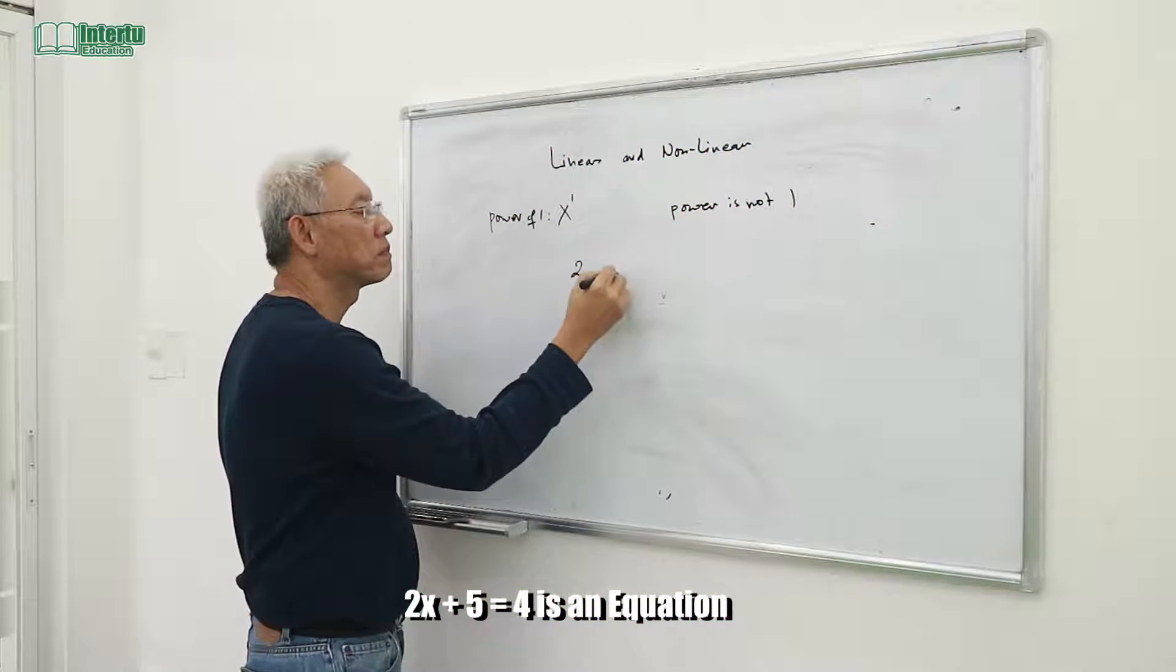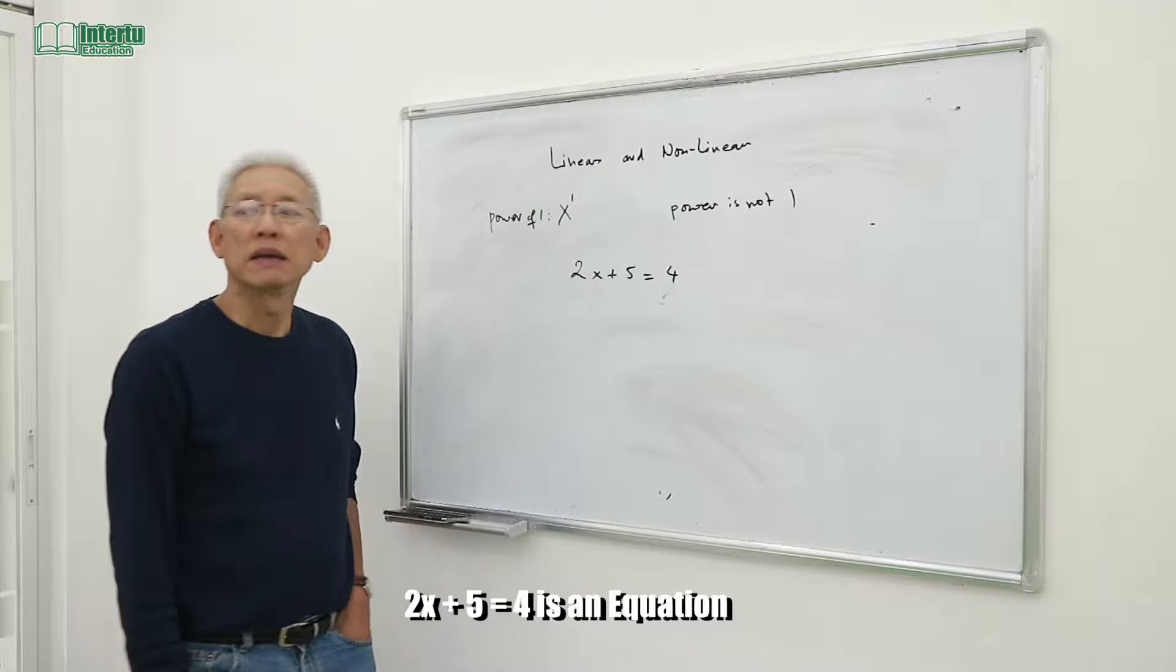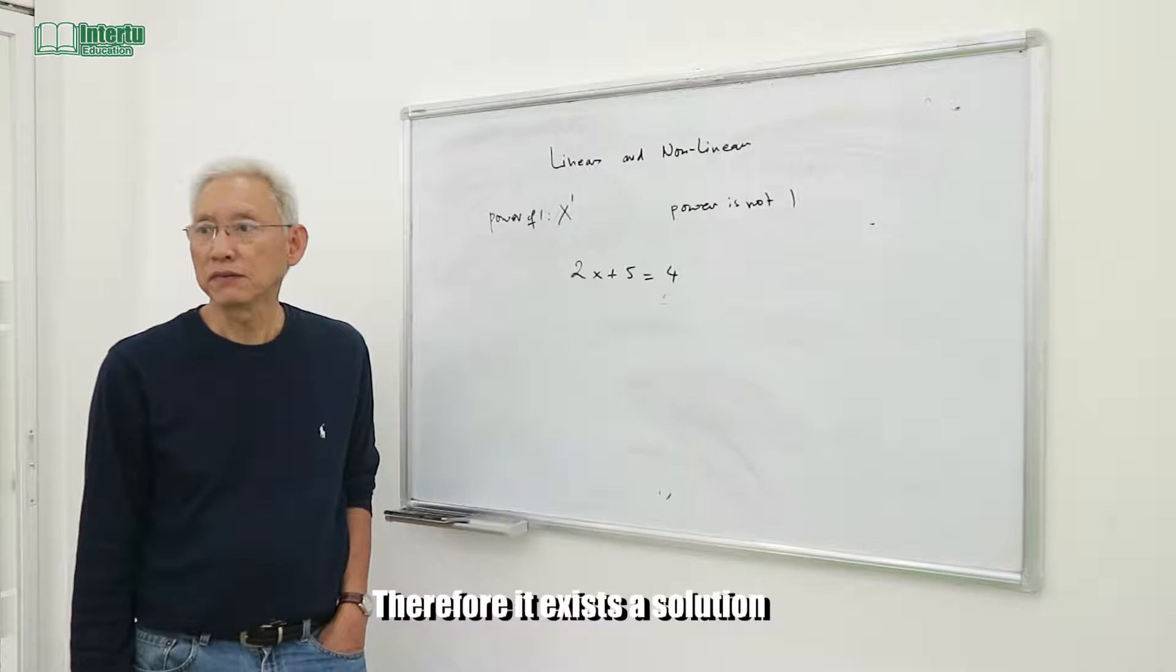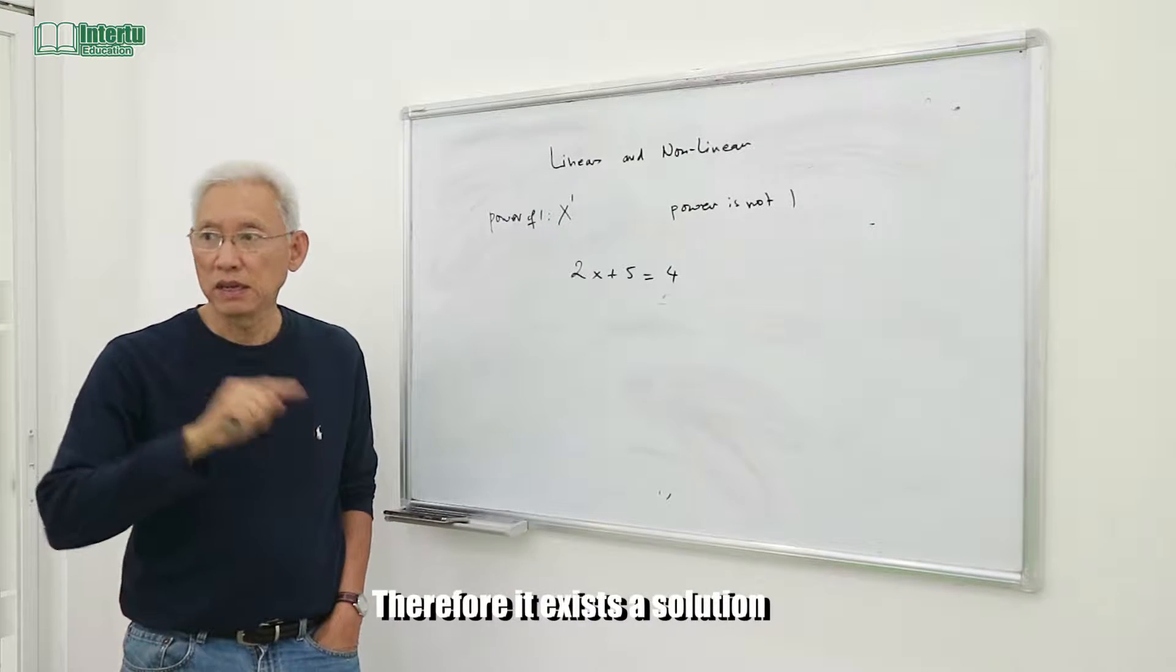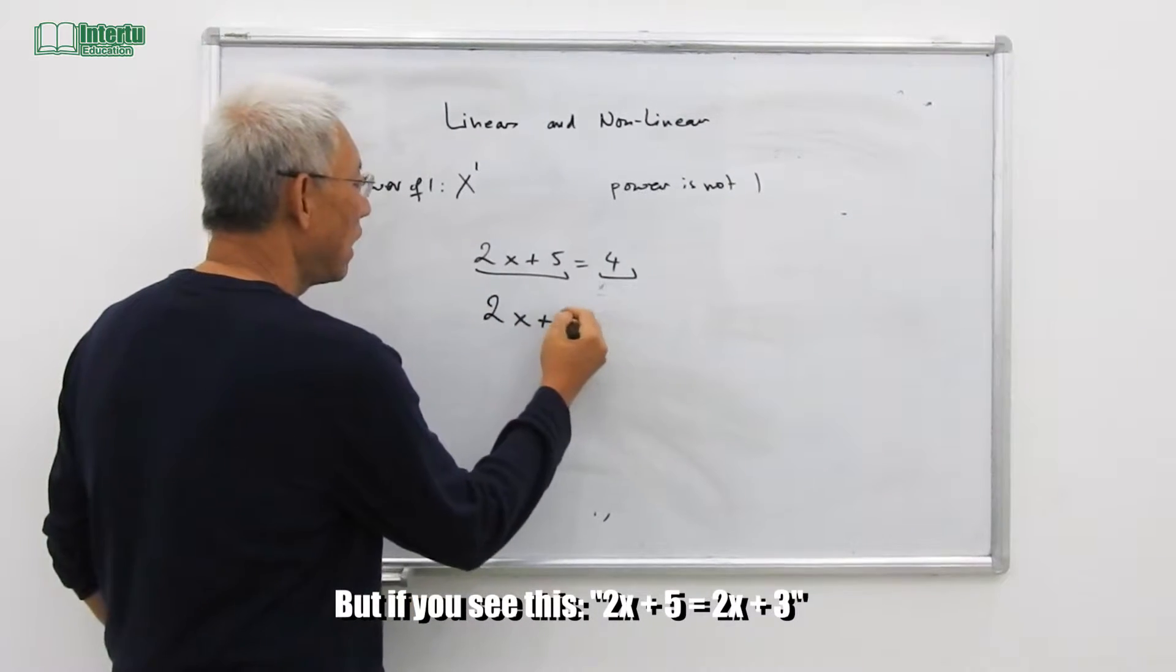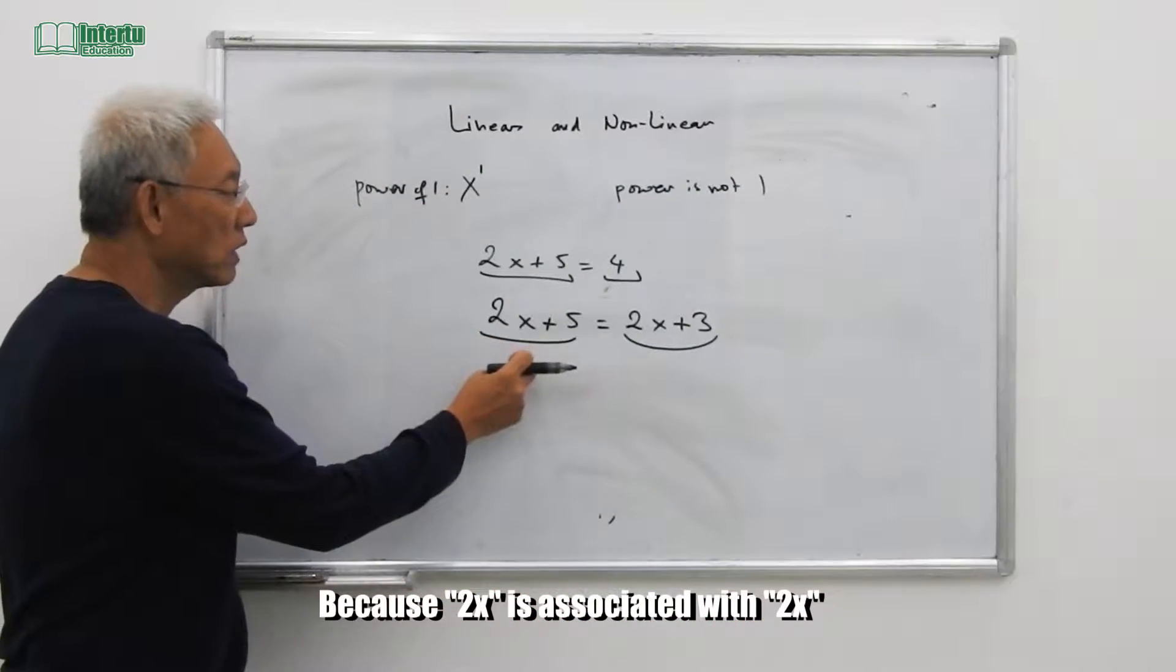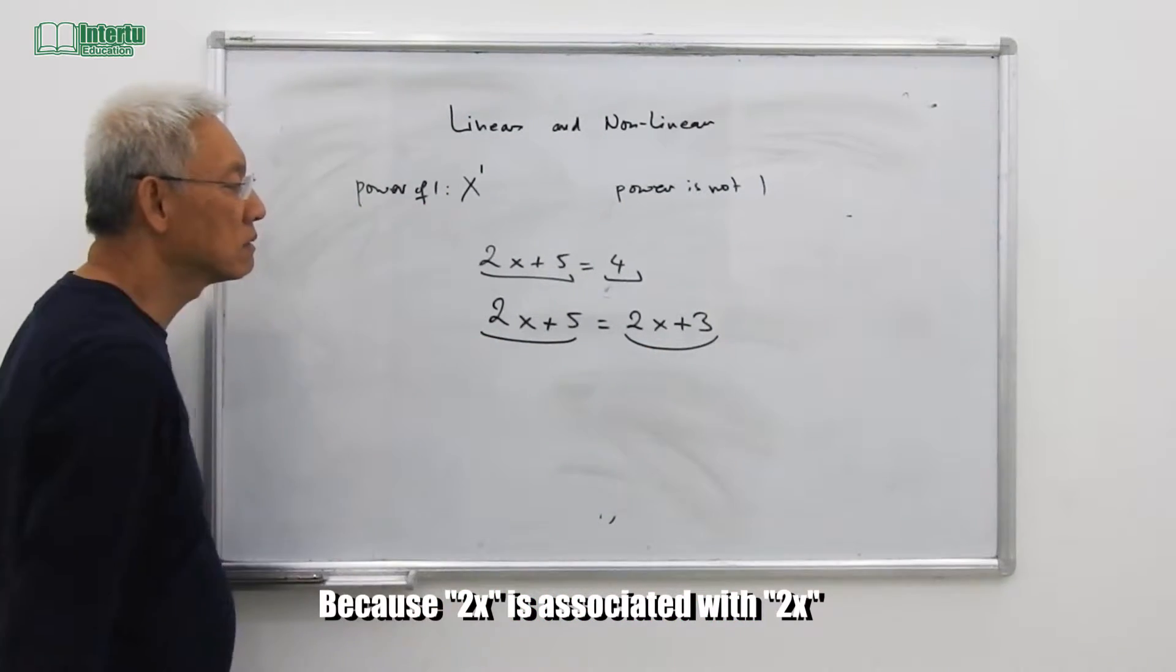2x plus 5 equals 4 is an equation, therefore it has a solution. But if you see this: 2x plus 5 equals 2x plus 3, the two values are not the same because 2x is associated with 2x, but 5 cannot be associated with 3.